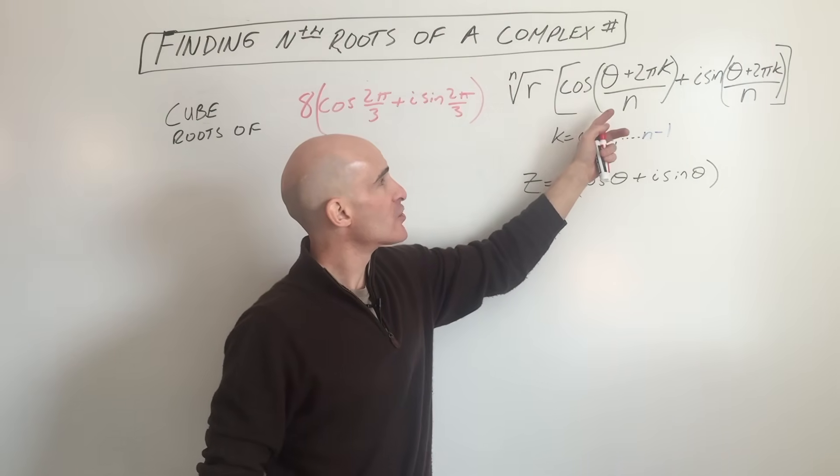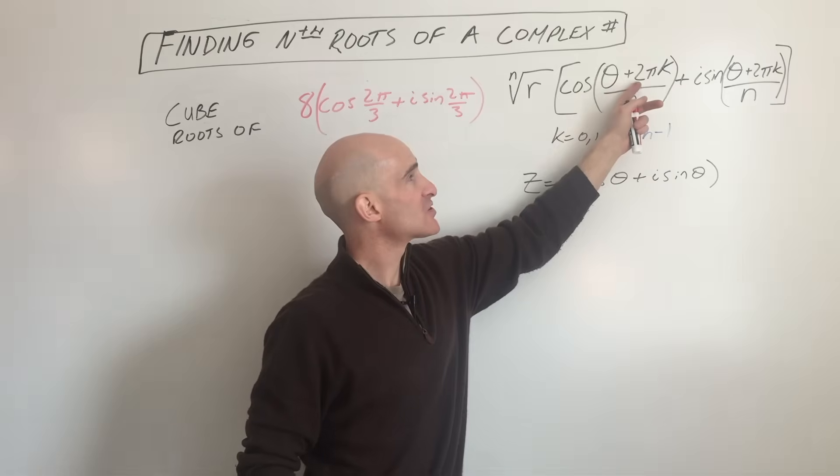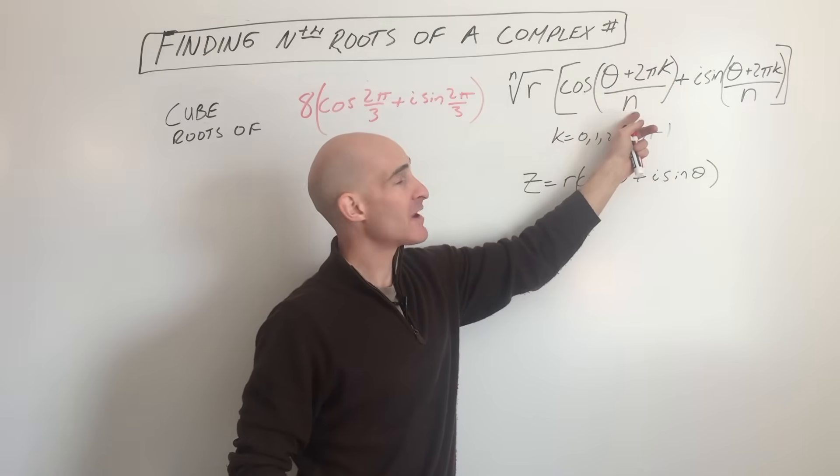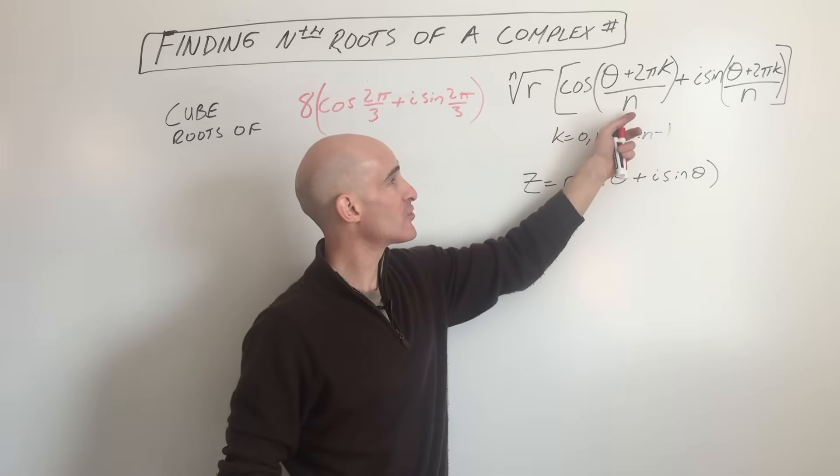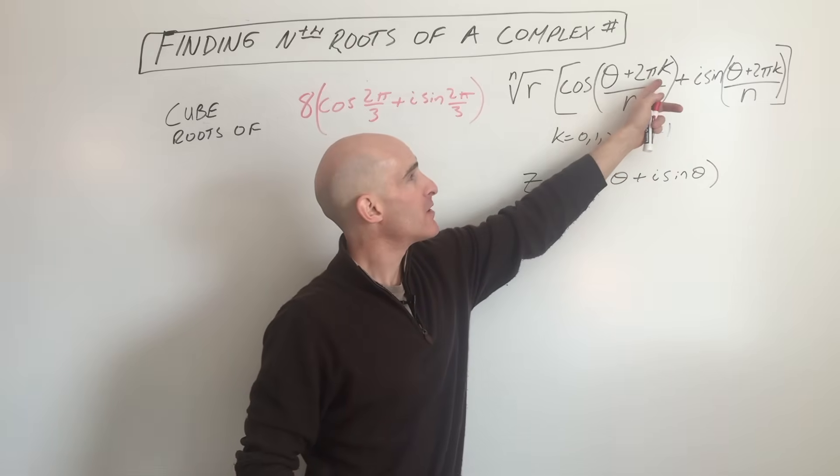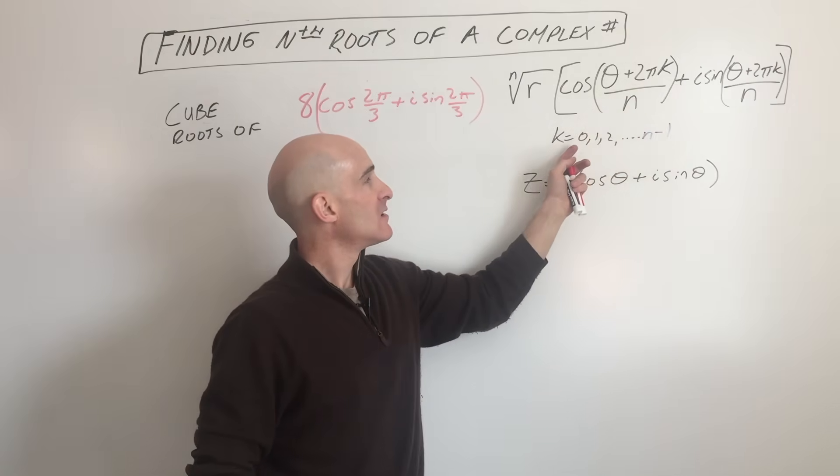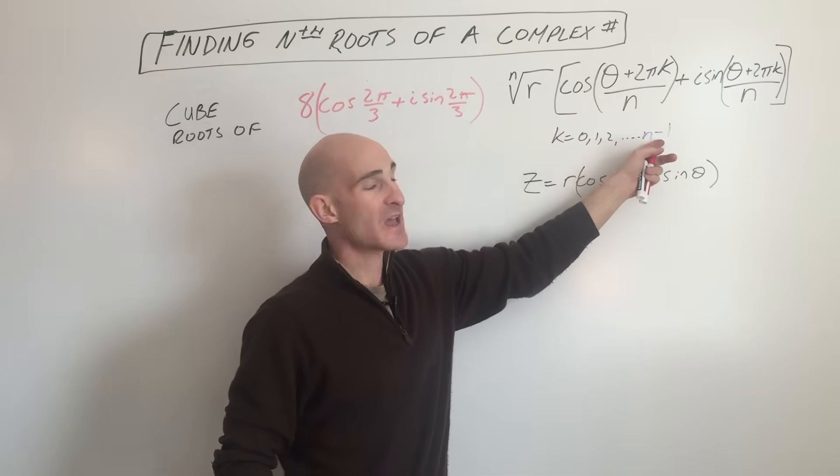And then you're going to take the angle plus 2πk divided by whatever root you're taking. So if it's the cube root, n is going to be 3. If it's the fourth root, it's going to be 4 and so on. But k is always going to be 0, 1, 2, all the way up to n minus 1.